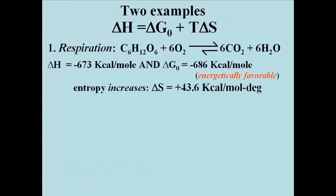Here are two familiar examples. Here's respiration again. The enthalpy change we said was minus 673 kilocalories per mole of glucose burned, and the standard free energy change, or delta G0, works out to minus 686 kilocalories per mole of glucose burned, if you actually measured the concentrations of CO2, oxygen, glucose, and water at equilibrium. When you solve the equation delta H equals delta G0 plus T delta S for delta S, delta S turns out to be plus 43.6 kilocalories per mole degree.